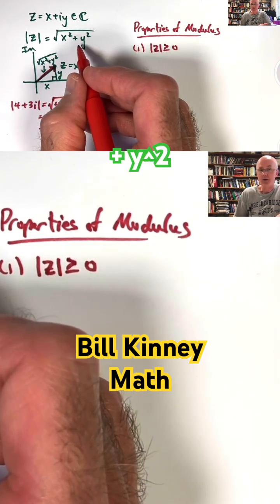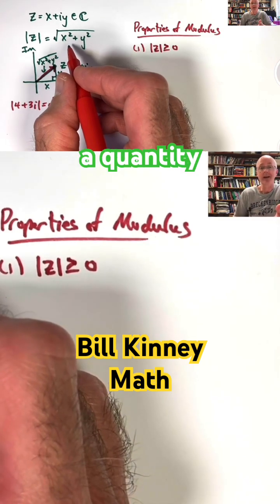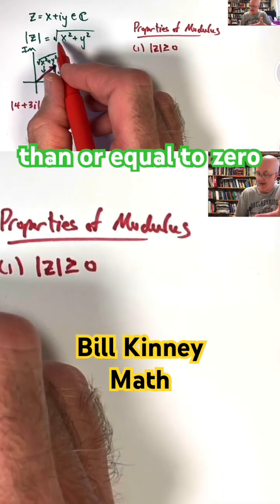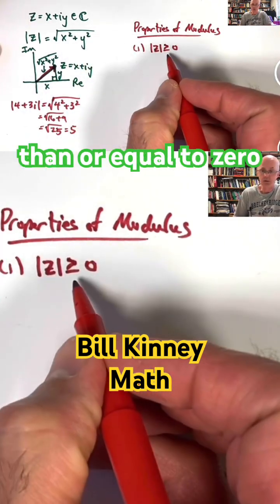x squared plus y squared, no matter whether x and y are positive or negative, is a quantity that's greater than or equal to 0. And when you take the square root of such a quantity, you get a quantity greater than or equal to 0.